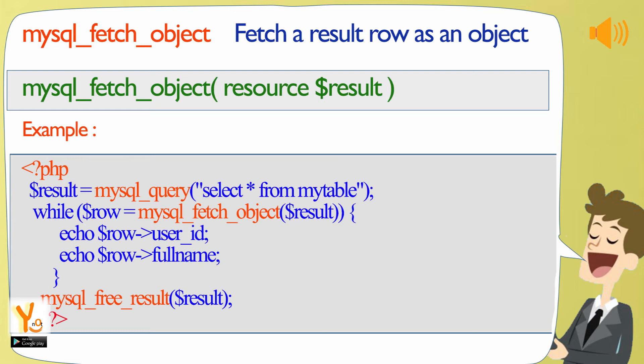mysql_fetch_object fetches a result row as an object.